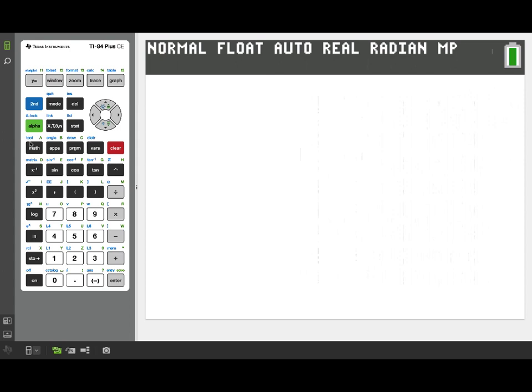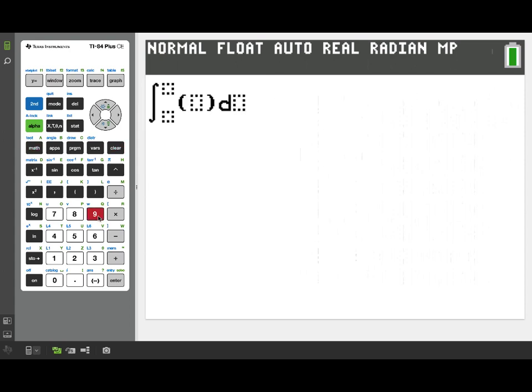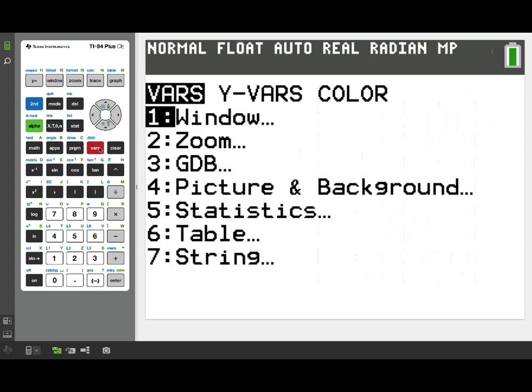Now the first question in this problem asked for how many people entered the line total between time equals 0 and time equals 300. The numerical answer, since we're given a rate, will simply be the definite integral from 0 to 300 of our rate function.